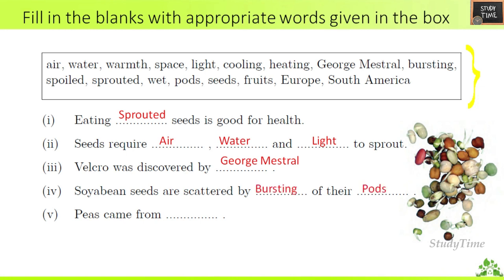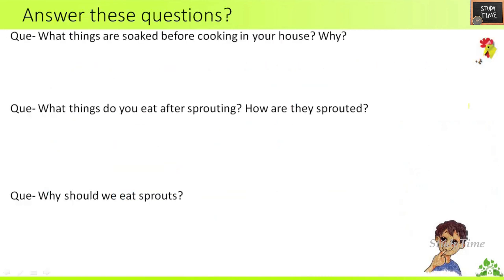Fourth question — soya bean seeds are scattered by bursting of their pods. Fifth question — peas came from Europe.